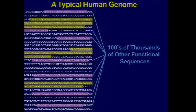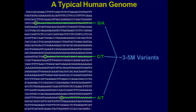Besides understanding the functional landscape of the human genome, we've also now done studies to figure out how all of our genomes are different from one another. Across your genome compared to the person sitting to your left or right, there are about three to five million letters that are different. There may be a G at one position where the person next to you has an A, or a C versus a T.